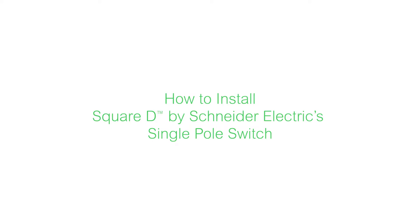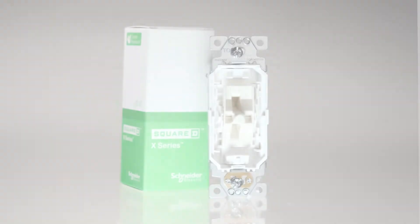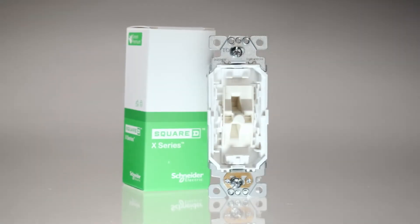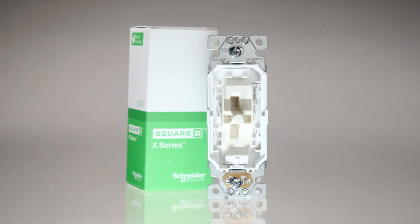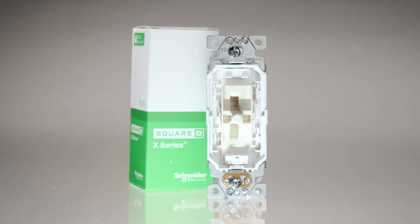This video will show you how to easily install Square D by Schneider Electric's single-pole switch, the most common electrical switch in a residential setting used to turn lights and other devices on and off from a single location.